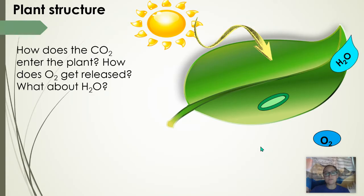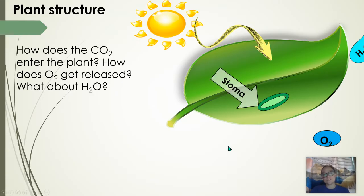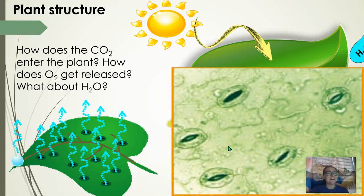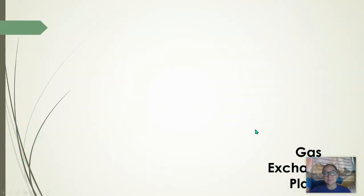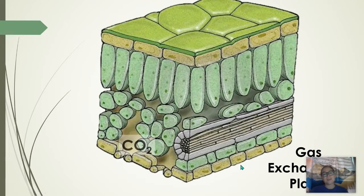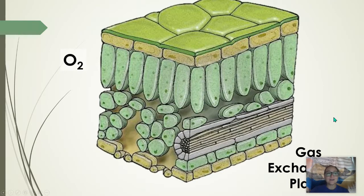Water is also lost from the stomata through transpiration — when water evaporates from plants, it comes through the stomata. The stomata are actually on the underside of the plant leaves, where carbon dioxide enters and oxygen leaves. Inside the leaf, there are air spaces for gas exchange.